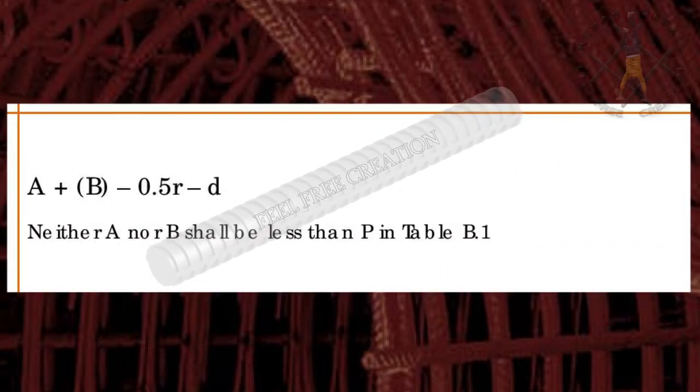Total length equals A plus B minus 0.5 times bending radius minus bar diameter. Neither A nor B shall be less than P in table B.1.